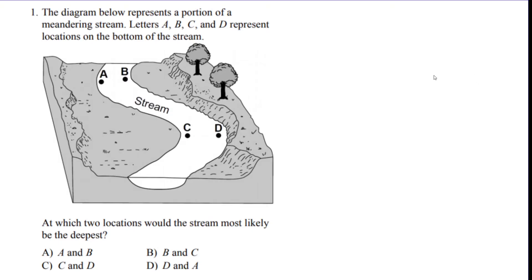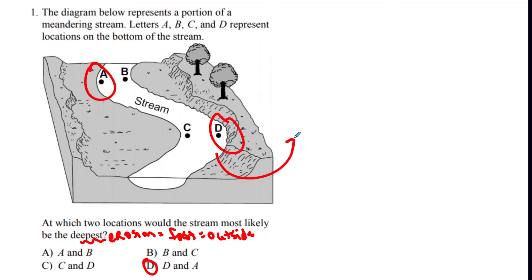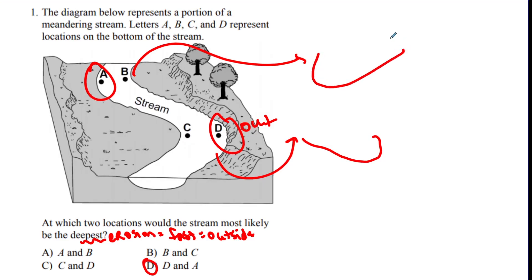On to practice questions. Pause the video, try to answer, and then I'll go over how it's done. Question: at which two locations would the stream most likely be the deepest? For deepest, we want a lot of erosion, which means we want fast water, which means we want areas on the outsides of curves. D and A are the winners. D to C has the outside on one side so the river channel is deeper there; A to B is the opposite. A straight section with no curve gives an even profile.